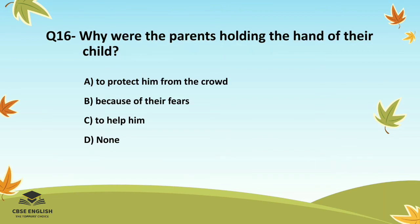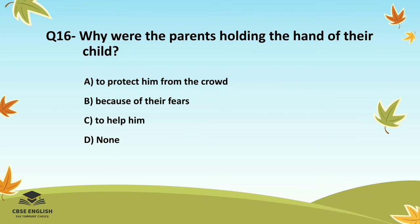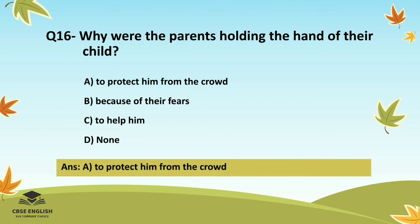Question number sixteen: Why were the parents holding the hands of their child? Options are: to protect him from the crowd; because of their fears; to help him; or none. The correct answer is to protect him from the crowd.